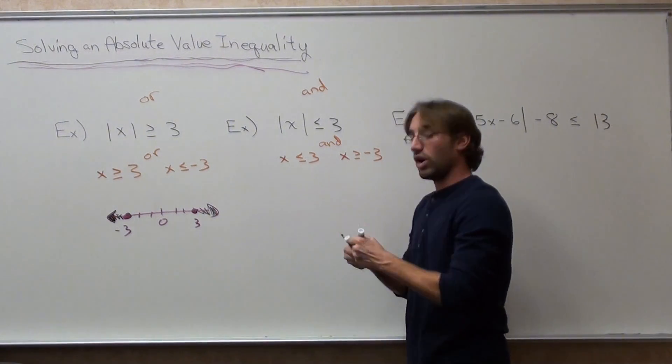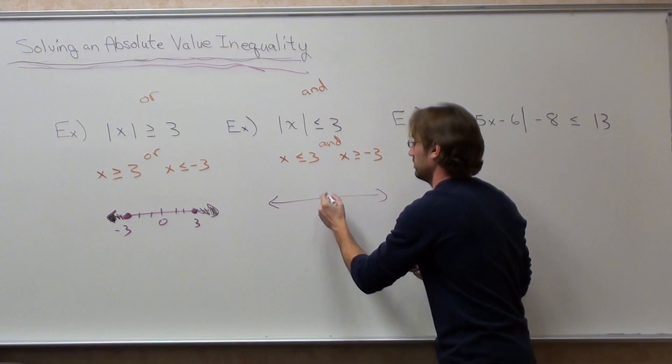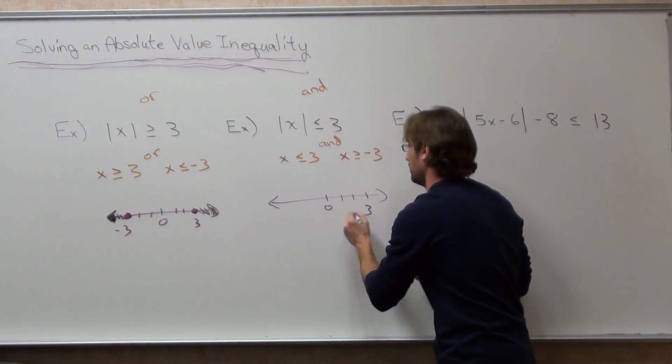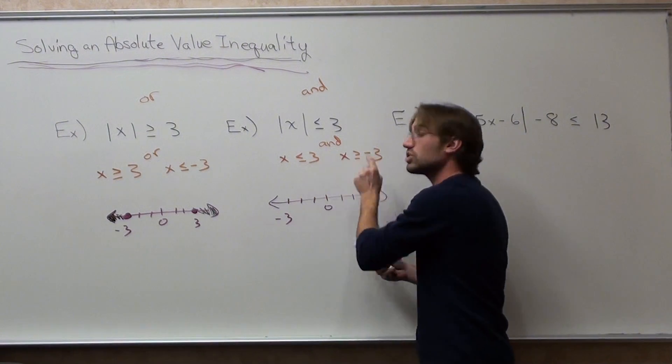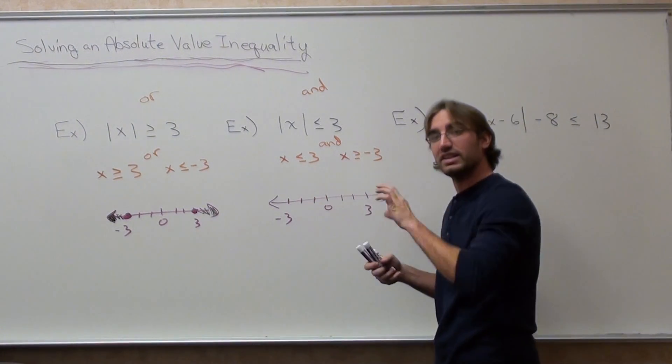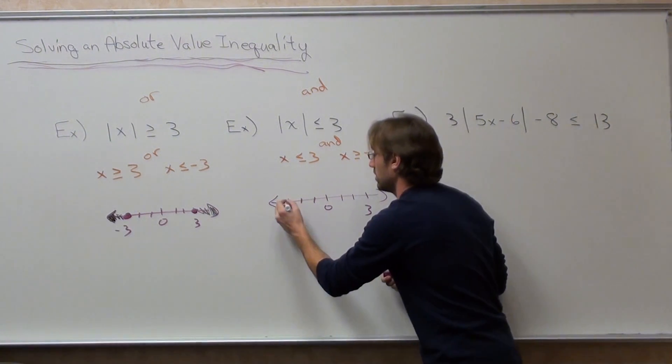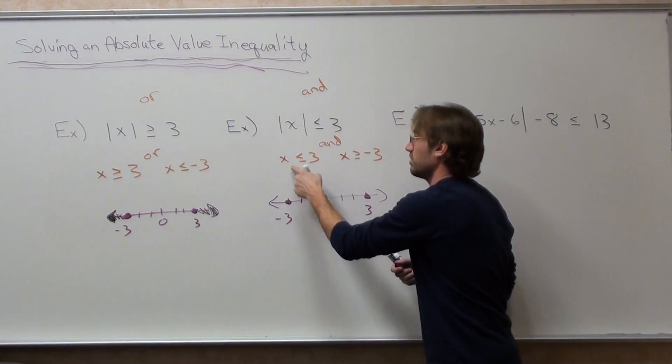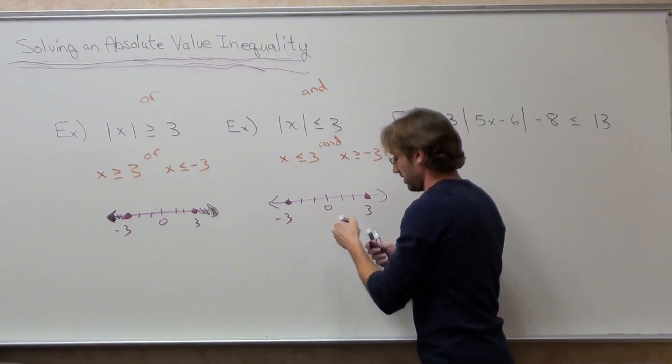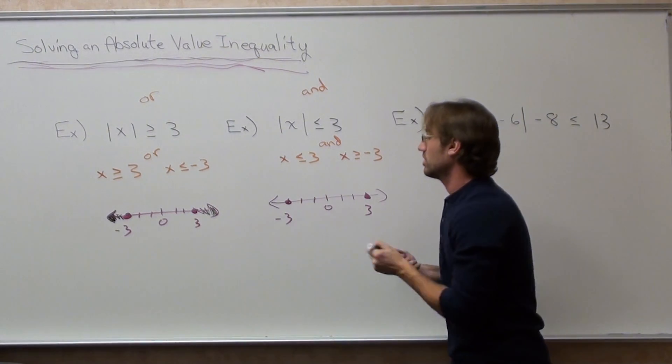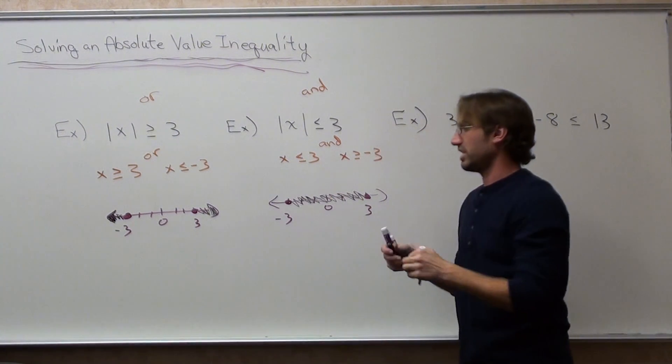This one, when you go ahead and make yourself a number line. They're both closed circles because they have lines underneath it. If they didn't, they'd be open circles. And it's going to be less than the 3, but at the same time AND it's going to be greater than the 3. So your shading's right there.